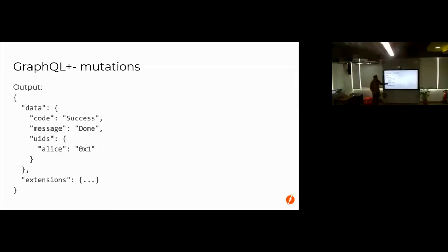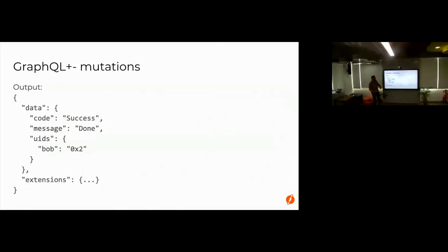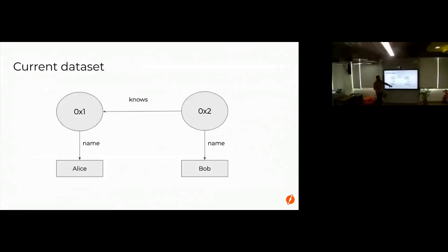To store data you use mutations with N-Quads format. You use blank UIDs as placeholders — for example, _:alice — which lets you attach multiple predicates to the same new node. So '_:alice <name> "Alice".' stores Alice's name. The response tells you the actual assigned UID, like 0x1. Then '_:bob <name> "Bob" . _:bob <knows> <0x1> .' creates Bob and his relationship to Alice. That creates two nodes with a knows relationship.